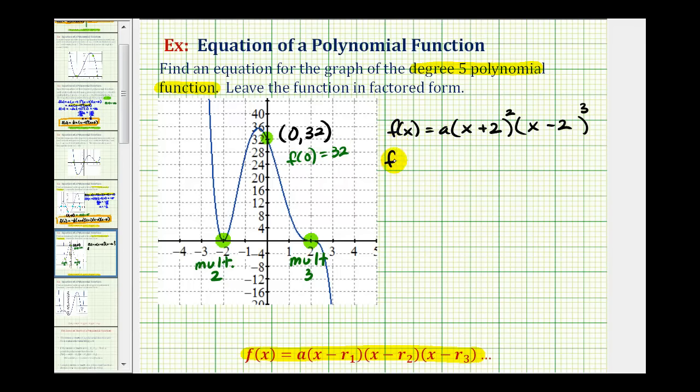So now we'll set x equal to zero and set this function value equal to thirty-two. So we would have a times, if x is zero, this should be two to the second. And if x is zero here, we'd have negative two to the third. And this must equal positive thirty-two.